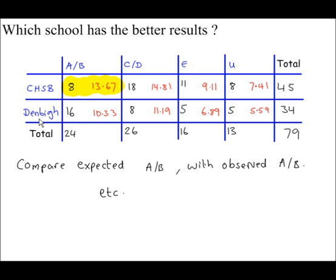For Denbigh, we expected around 10, maybe 11 students to get A and B grades. But they did significantly better by having 16 students scoring A and B grades. So, this would imply that Denbigh students did better than Cholney boys. And the school that the students went to did matter.